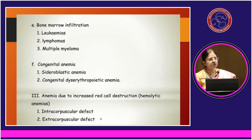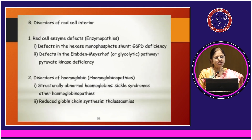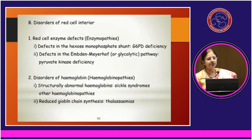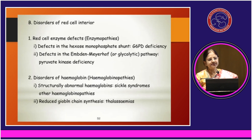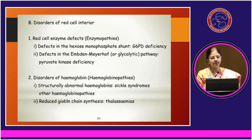The third major cause is increased destruction of red cells, which could be due to intracorpuscular or extracorpuscular defects. Intracorpuscular causes include enzymopathies such as G6PD deficiency, defects in the Embden-Meyerhof pathway, or disorders of hemoglobin — the hemoglobinopathies — which are very important, particularly sickle cell and thalassemia.